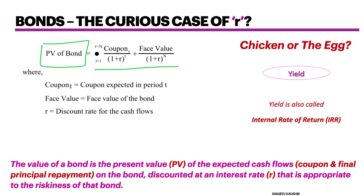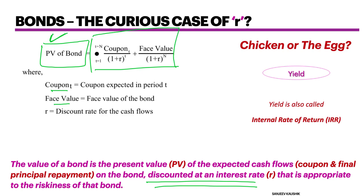The present value of a bond is nothing but the price at which the bond is traded on the secondary market. A bond pays certain coupons until it matures, and after maturity it pays back the face value to the owner. All the future cash flows can be discounted at an interest rate using this formula to arrive at the present value of the bond.